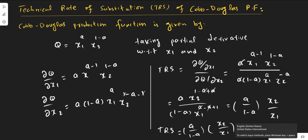Suppose the Cobb-Douglas production function assumes this functional form. To find the technical rate of substitution for the Cobb-Douglas production function, we need to take the partial derivative of the Cobb-Douglas production function with respect to x1 and with respect to x2. This will give us the marginal physical productivity of factor x1 and of factor x2.